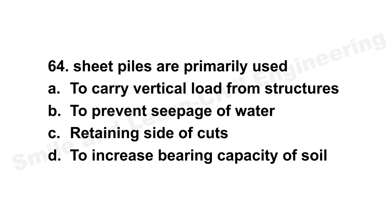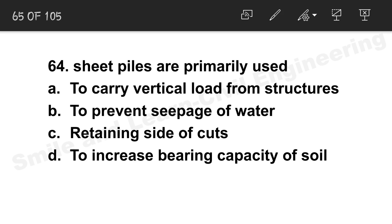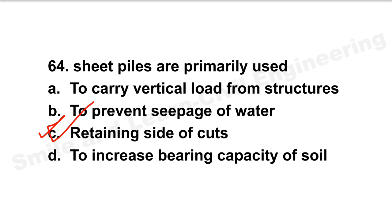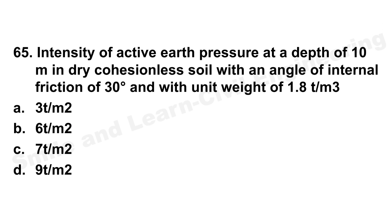Question 62: Buoyant unit weight of soil equals saturated density minus the unit weight of water. Option D is the correct answer. Question 63: Passive earth pressure decreases with a decrease in the angle of internal friction. Option A is the correct answer.